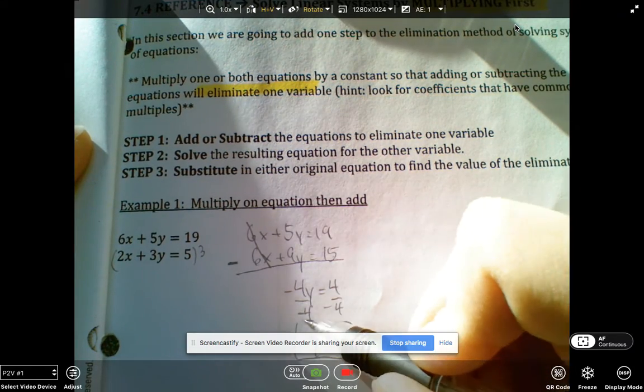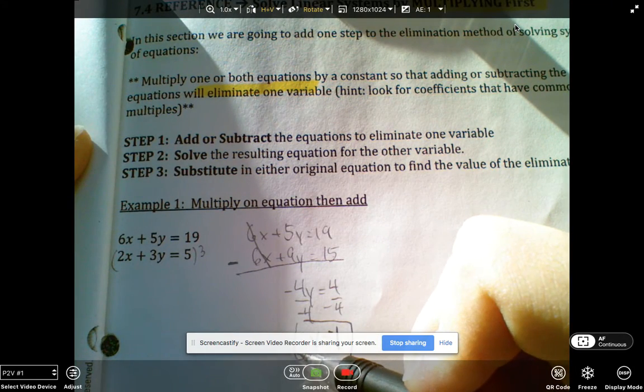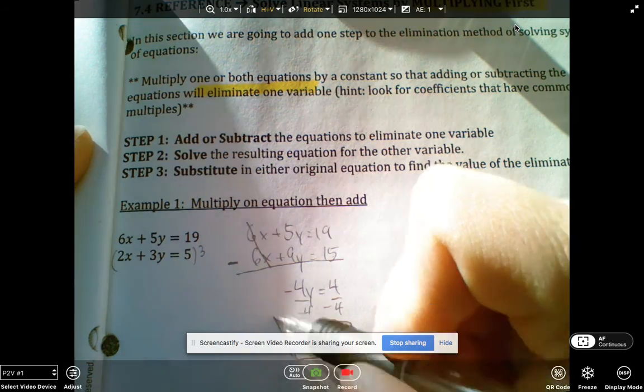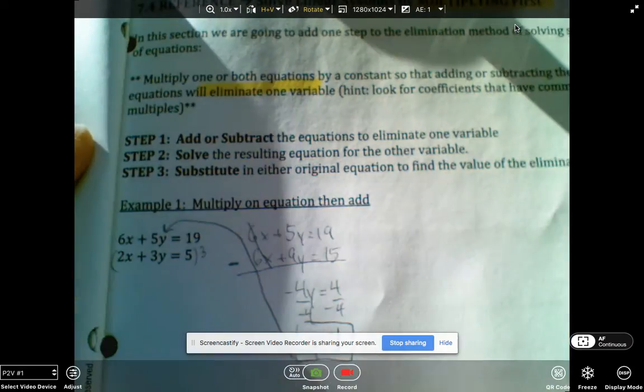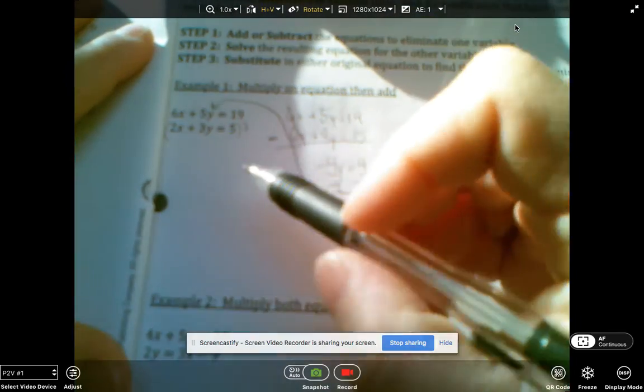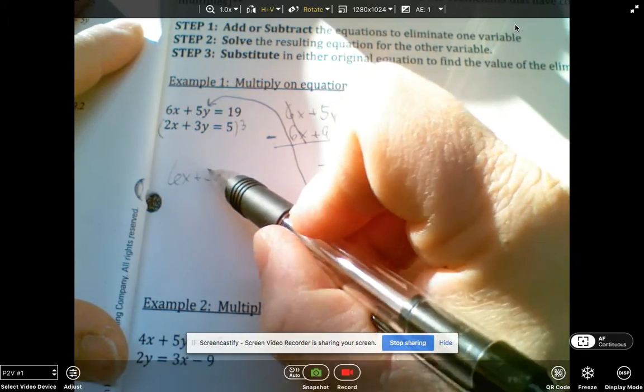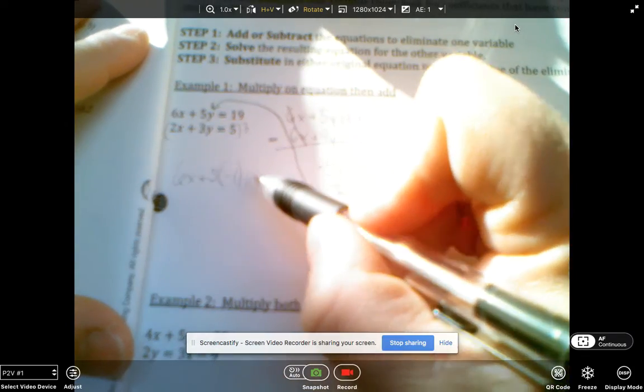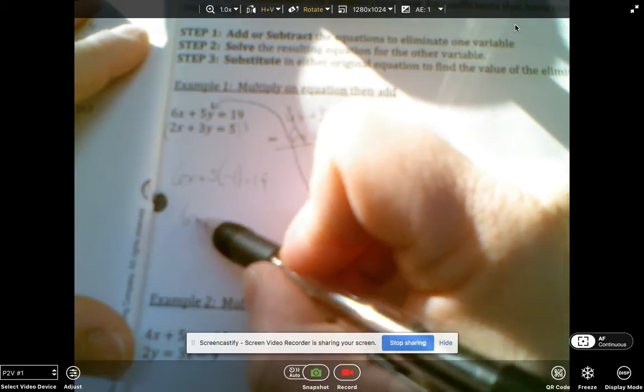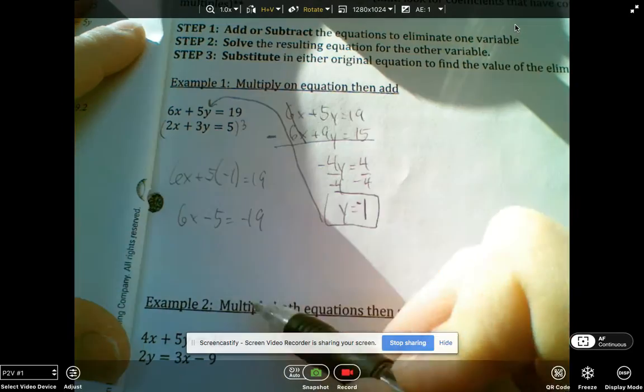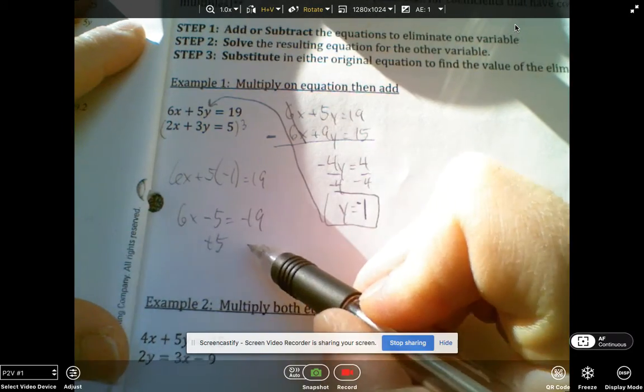So then we'll do our back sub. I'll back sub it into the first equation here. When I back sub it, I'm left with 6x plus 5 times negative 1 equals 19. And then you add 5 to both sides.